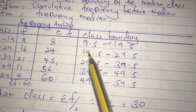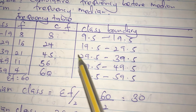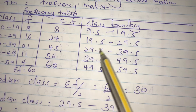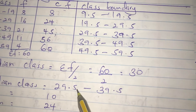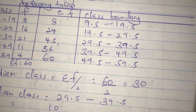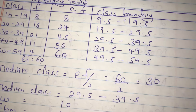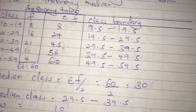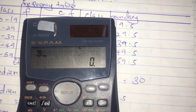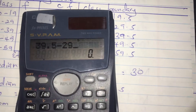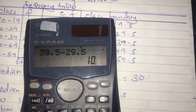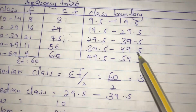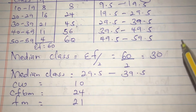The median falls within that class, so our median class is 29.5 to 39.5. The class width is calculated as 39.5 minus 29.5, which equals 10. You can use any of the available class intervals and they will give the same answer, so the class width is 10.